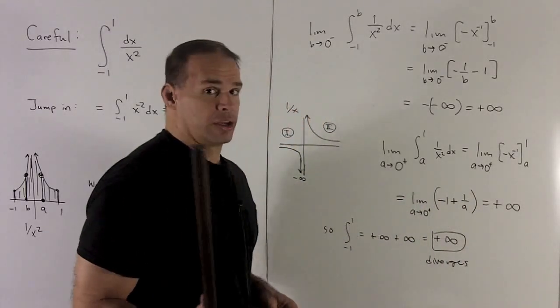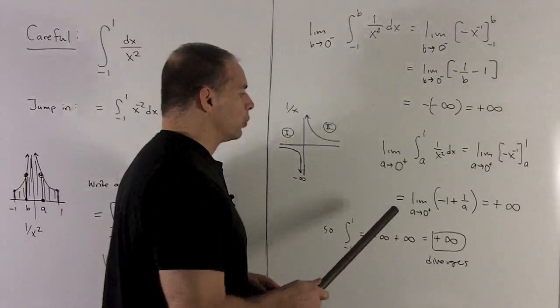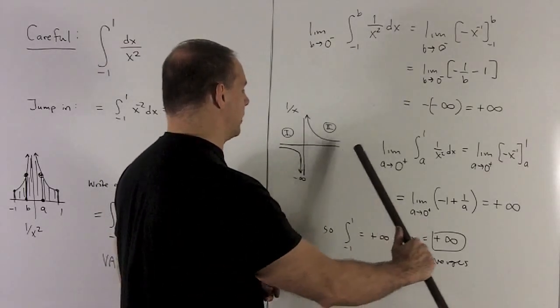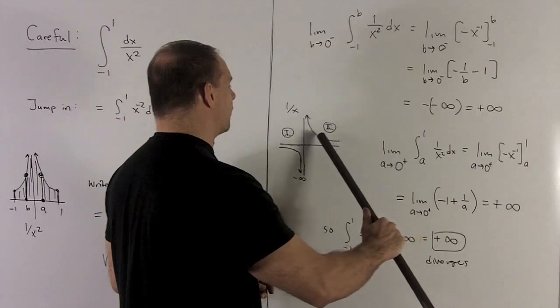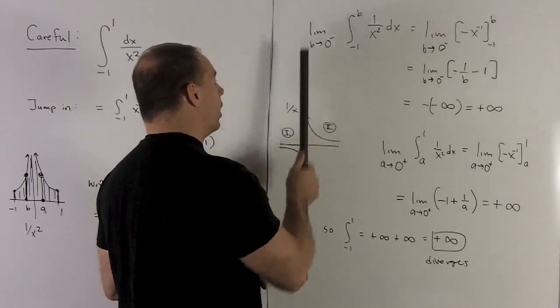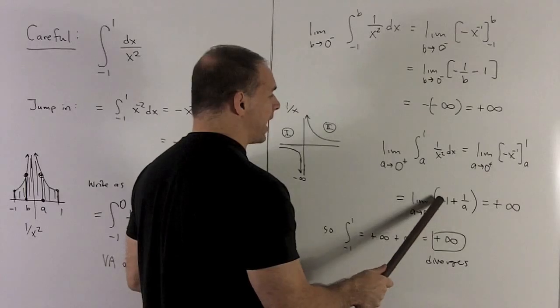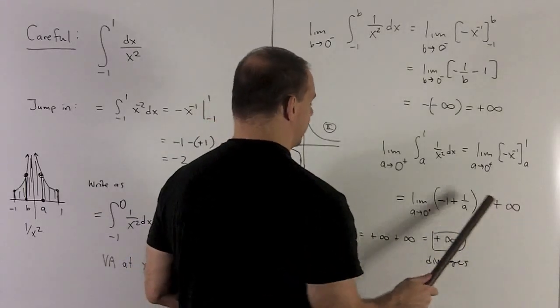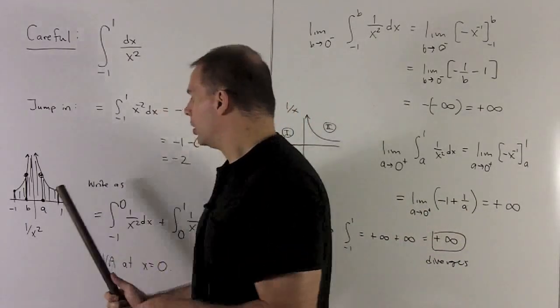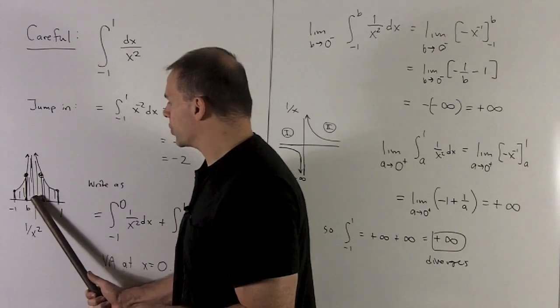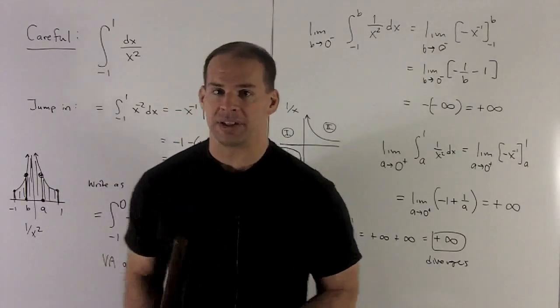Again, I take a look at the graph of 1 over x. We're going to go to 0 from the right, so we're coming in from this direction. We notice for the graph, the y values are going to go up to plus infinity. This minus 1 will have no effect, so I'm just going to wind up with plus infinity for the area on this side. So that's when a goes all the way down to 0. That's plus infinity also.